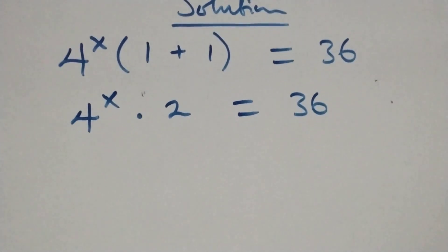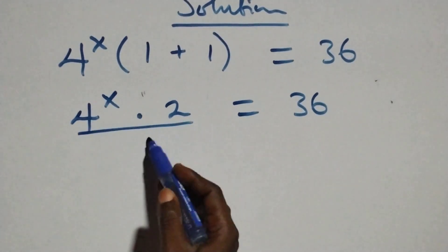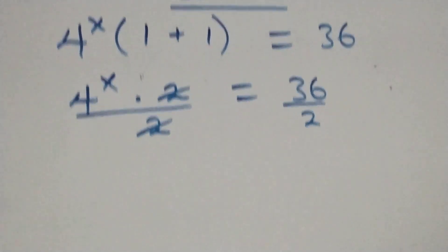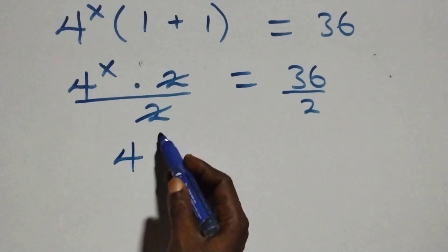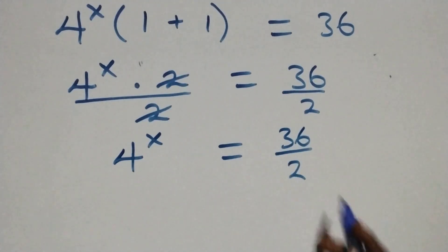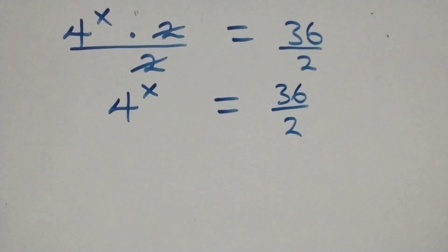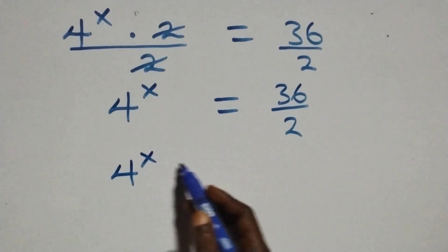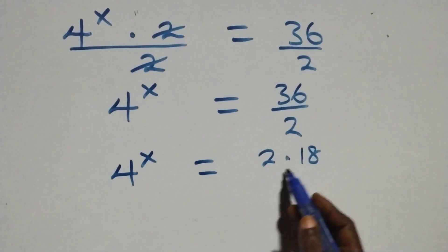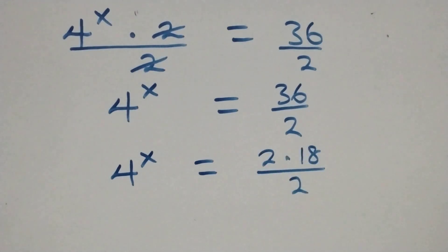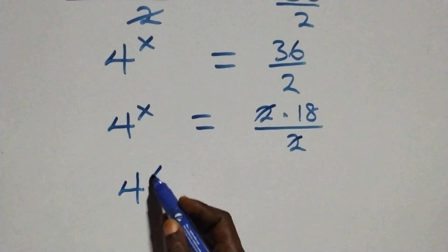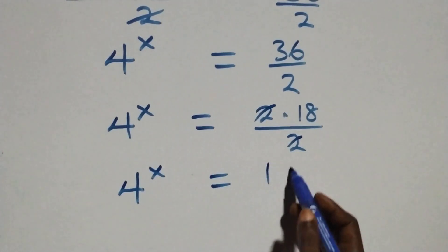The next step here, we divide both sides by 2 — divide this side by 2, also divide this side by 2, to cancel each other. We have 4 raised to power x equals 36 over 2. We write this as 2 times 18 over 2; the 2s cancel each other, and we have 4 raised to power x equals 18.